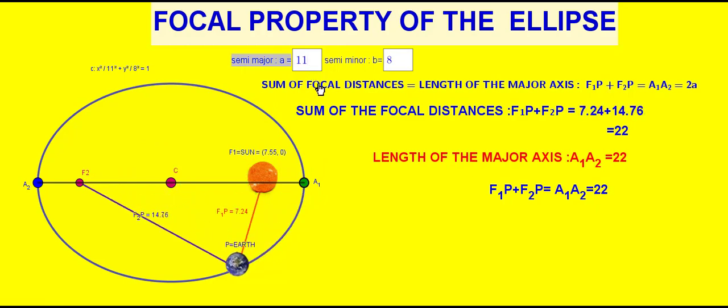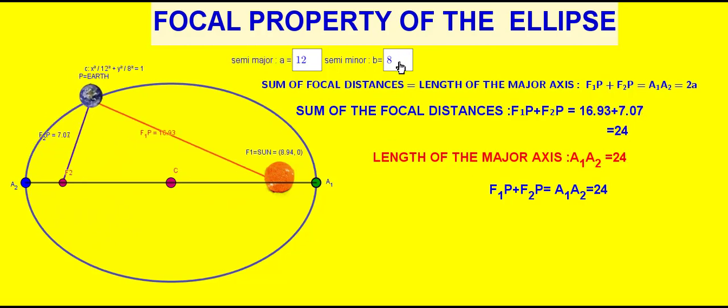When a equal to 12 and b equal to 8, we can see that f1p plus f2p equal to 24 and a1a2 equal to 24. Similarly,